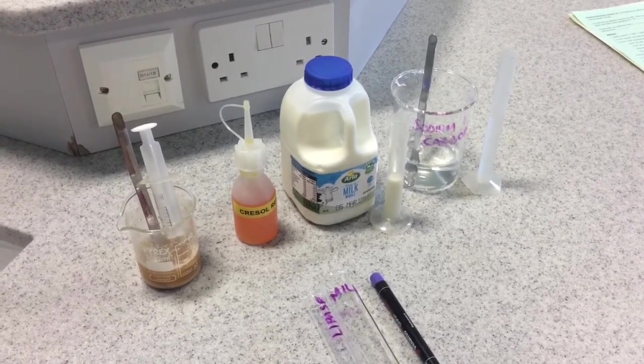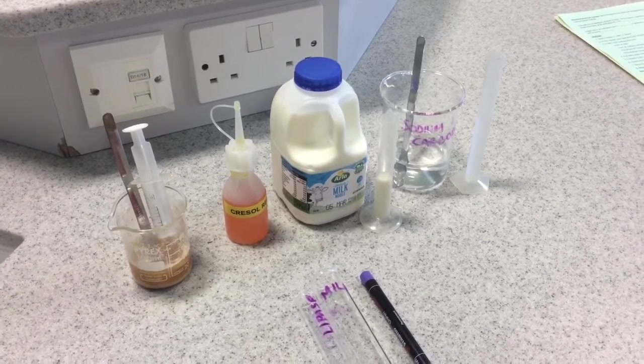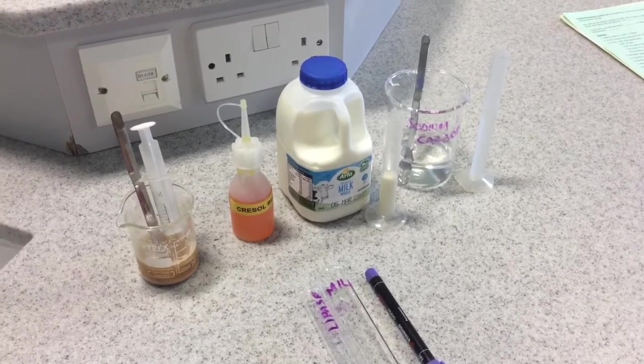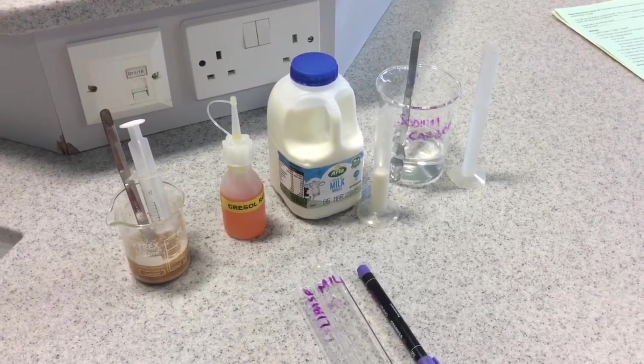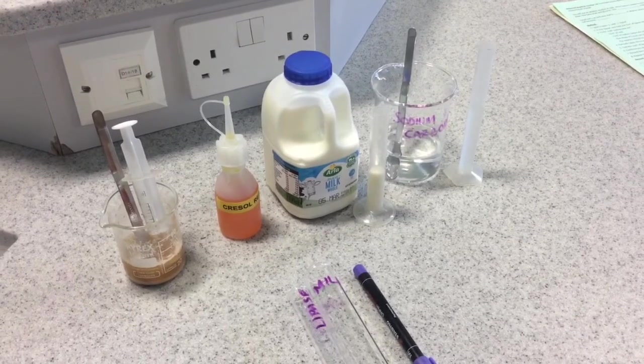The sodium carbonate makes the pH slightly lower for us today. Cresol red is an indicator that is lilac-y purple in alkaline conditions, but when the pH drops below pH 8.3, Cresol red becomes yellow.